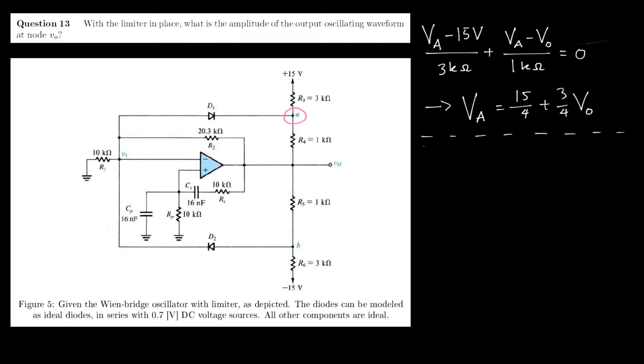The second equation that we need to find is the expression of V1 in terms of VO. And we can do that using simple voltage division because V1 lies in between two resistors: 20.3 kilo ohms and 10 kilo ohms.